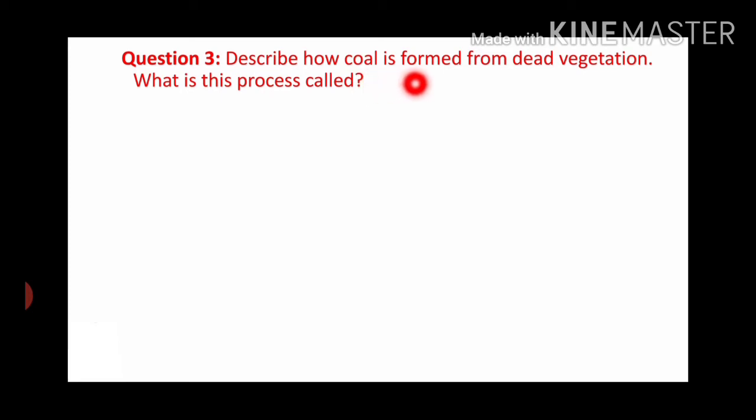The next question is: Describe how coal is formed from dead vegetation. What is this process called?